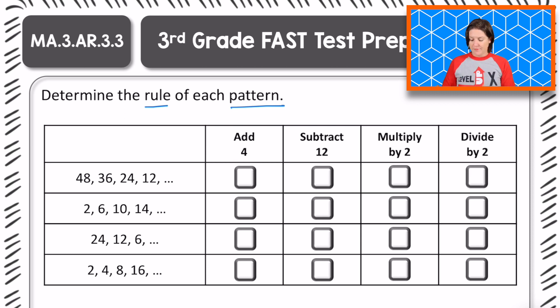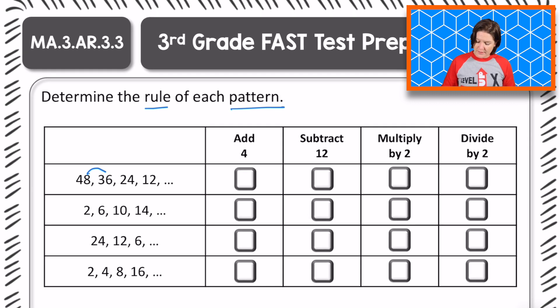I'm going to try subtraction first to see if that works. 48 to get to 36, that means we need to subtract what? 12, right? 48 minus 12 equals 36. Let's see if that pattern repeats. 36 minus 12, does that equal 24? Yes, it does. Let's check it one more time. 24 minus 12, does that equal 12? It does. So this one is subtract 12. If you were taking the computer-based test, you would scan over until you matched with the answer you want and click on subtract 12.